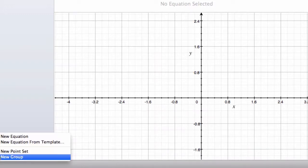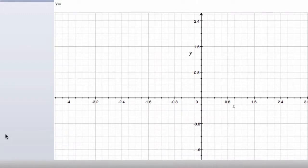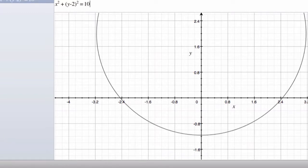Now if we graph this, I think we can see how these things are interacting with each other. Let's set this up. We have one equation. Our first one was x squared plus (y - 2) squared, and that equals 10. So we have a circle.